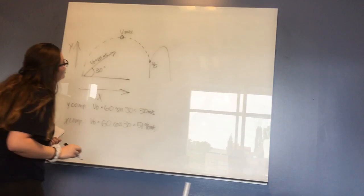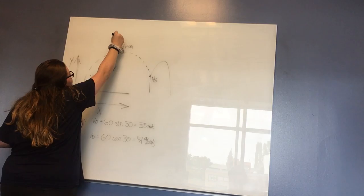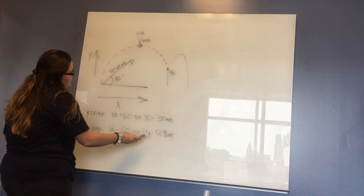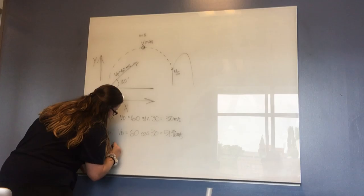Because we're finding the V max, the velocity is going to be zero at this point and it's not going to get any higher. So we're going to rely on our x component — the V max is going to be the same as the x component. So the answer for part A is going to be 51.96 meters per second, not 60 meters per second.